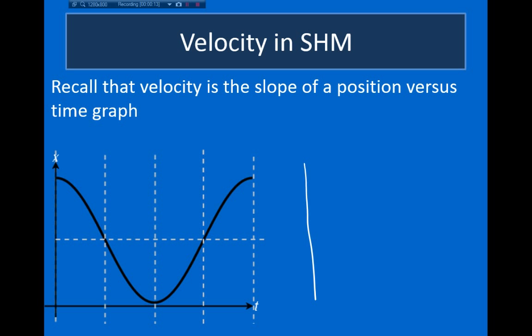Recall that velocity is equal to the slope of the position versus time graph. Here I show the position of an object that is undergoing simple harmonic motion. We can see initially the slope of this graph is equal to zero, so this means my initial velocity is zero. After this point, we see that the position is decreasing, so I have a negative slope, which means I have a negative velocity.